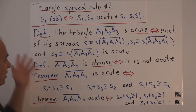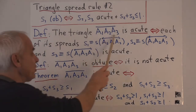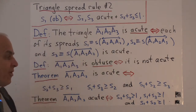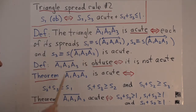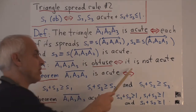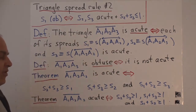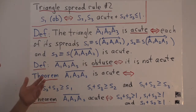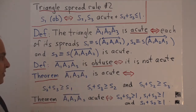Now we're going to define what we mean by an acute triangle. We say that the triangle A1, A2, A3 is acute precisely when each of its spreads is acute. And we say that it's an obtuse triangle precisely when it is not acute — in other words, when at least one of those spreads is obtuse. It's not hard to see that at most one spread can be obtuse, so the triangle is obtuse precisely when one of its spreads is obtuse.